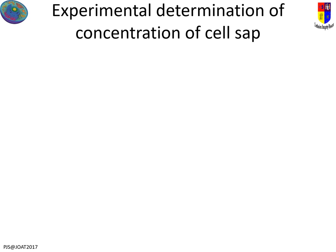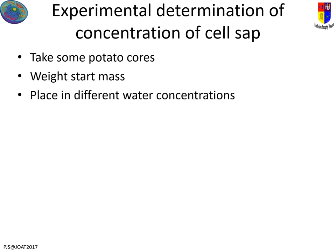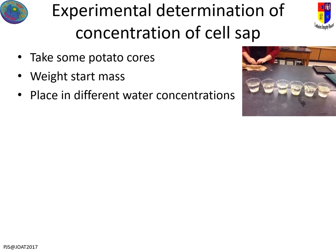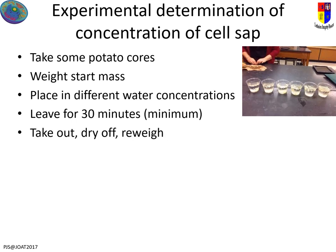This experiment is one we'd do in school, but there's also a simple version you can do at home. In school, we take potato cores, record a starting mass, and place them in different water concentrations — for example, zero, one, two, five, and twenty percent salt solutions. The higher the salt, the lower the water concentration. Leave them for at least 30 minutes, ideally an hour or overnight, then take them out, dry them off, and re-weigh them. You calculate the percentage change in mass because they don't always start at the same mass.